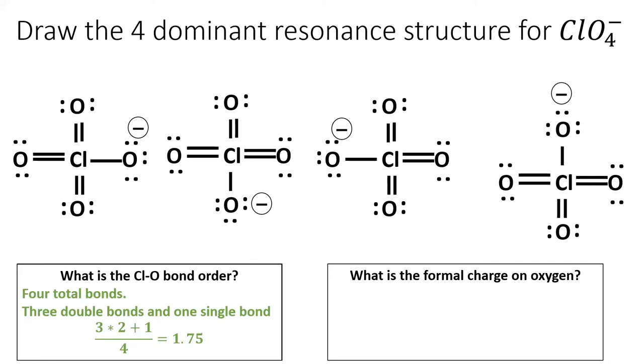To calculate the bond order, I see that I have four total chlorine-oxygen bonds. Three of them are double bonds with a bond order of two, and one is a single bond with a bond order of one. The math here shows the average bond order, which is 1.75. Thus, in the real perchlorate ion, each chlorine-oxygen bond is in between a single bond and a double bond, but a little bit closer to a double bond.